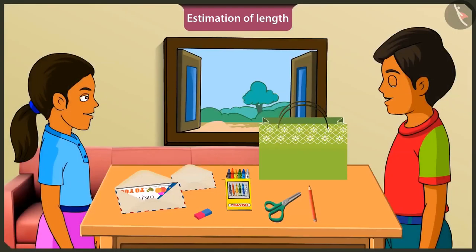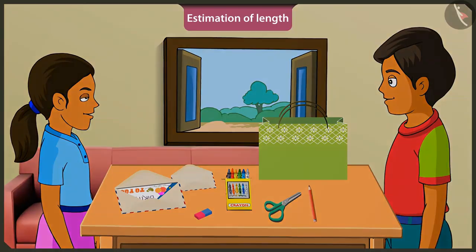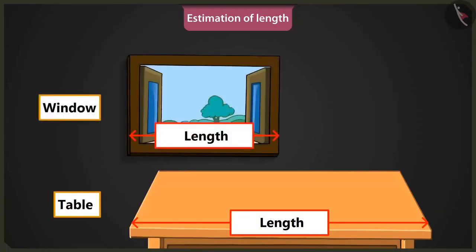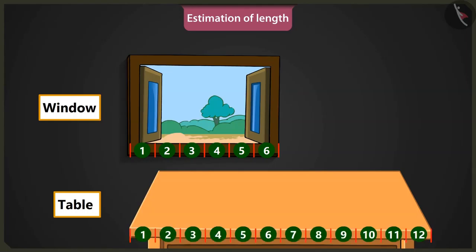Well done, Mintu. Now, tell me, what is the estimated length of this table? This table looks longer than the window. The length of the window is six spans of my hand. So, this table must be approximately twelve hand spans long.